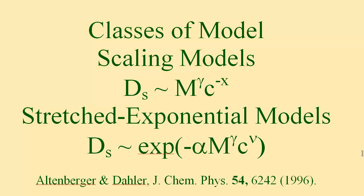Altenberger and Dahler, in a series of papers on their positive function renormalization group, have discussed how both of these mathematical forms can arise from the same physical model, depending on the location of the fixed points in the model.